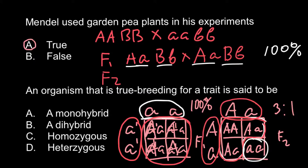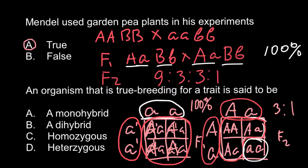When we get the F2 generation, the ratio is going to be 9 to 3 to 3 to 1. As you see, within the monohybrid cross we have a 3 to 1 ratio, while in the dihybrid cross we have a 9 to 3 to 3 to 1 ratio. In the monohybrid cross we started with one locus and one trait, whereas in the dihybrid cross we started with two loci and two traits — for example, color and shape.